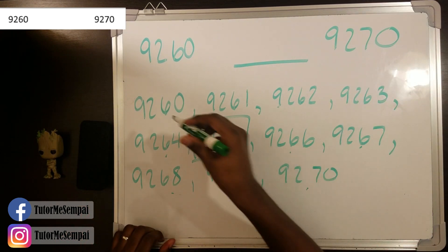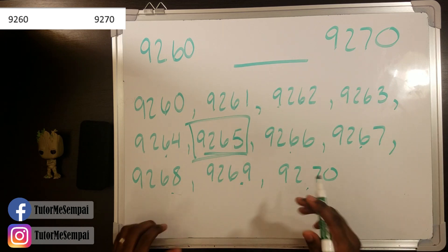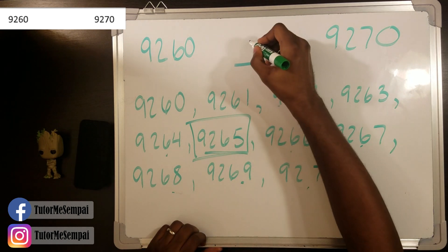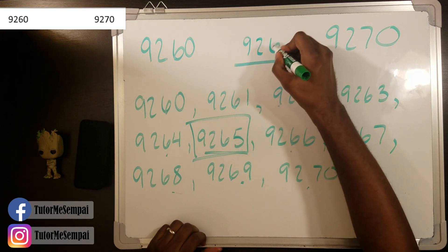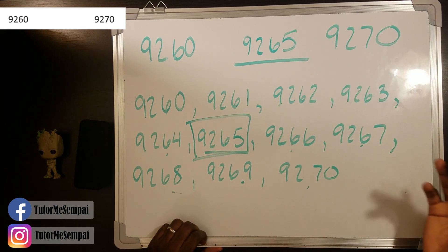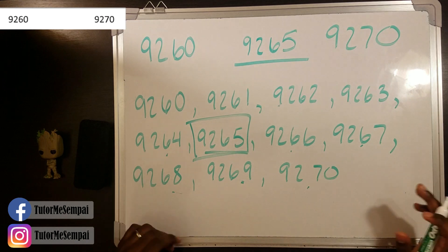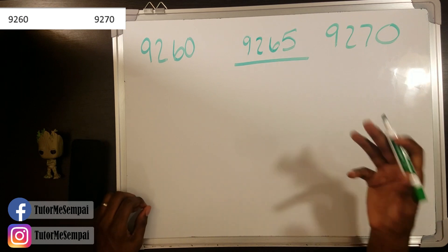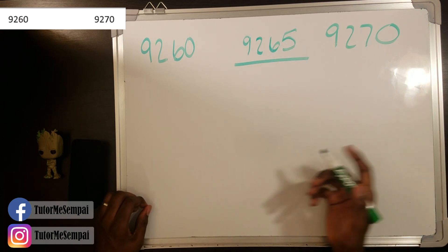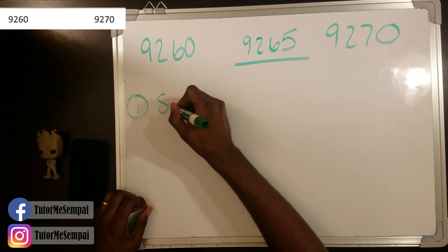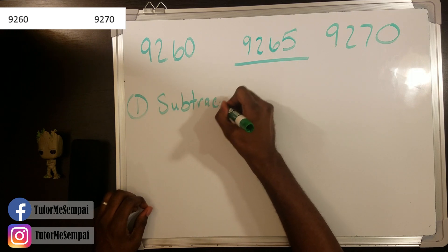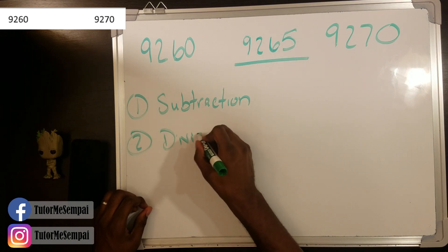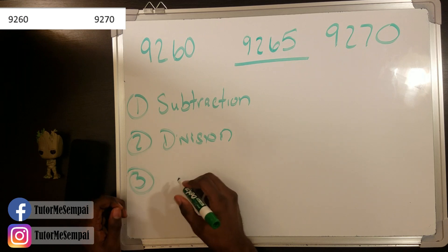So instead of writing out all of them and figuring out which one is directly in the middle, I'm going to show you some quick easy steps to do this. We'll write this here just so we know what the actual midpoint is, so when we compare our answer to what we have here, we'll know if we did it right. Whenever you're trying to find the midpoint or the middle number between two numbers, you really only need to do three steps. The first one is subtraction, the second is division, and the third is addition.